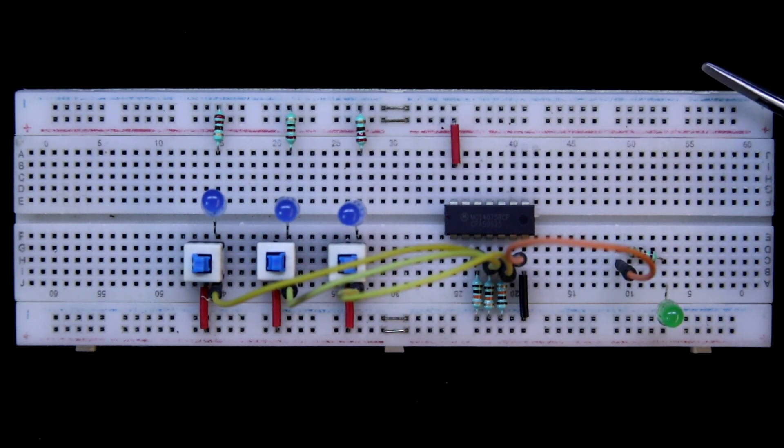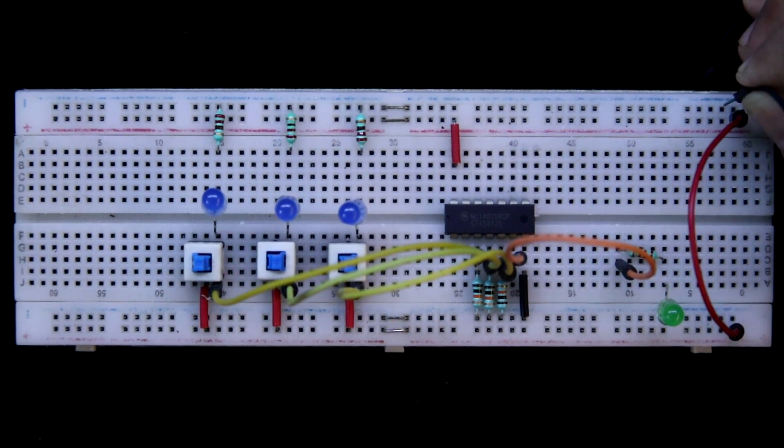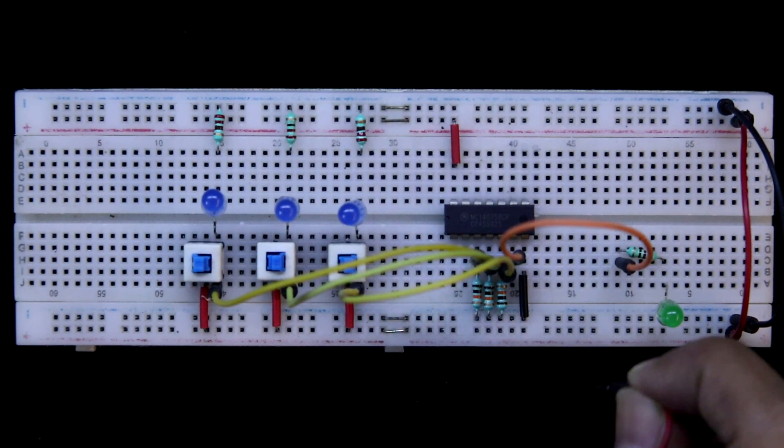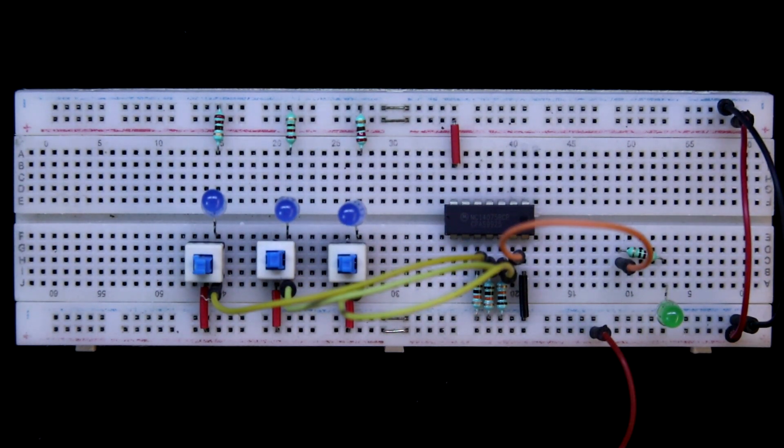As we are using all four power rails, we have to connect positive to positive and negative to negative. The connection is completed. Now connecting the 5V power supply. Here is positive, and the negative.